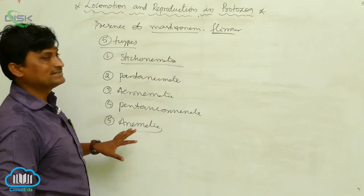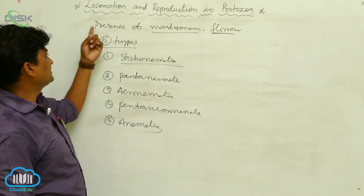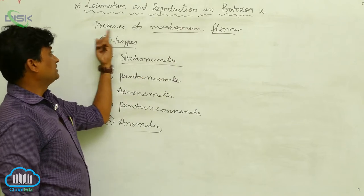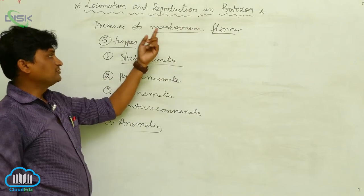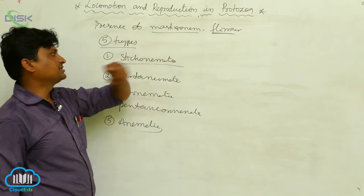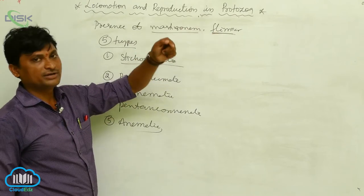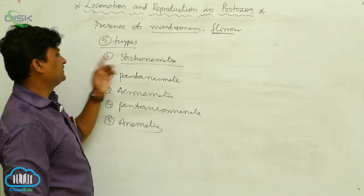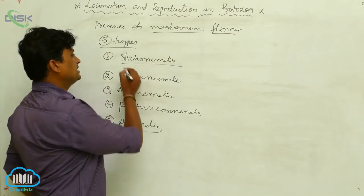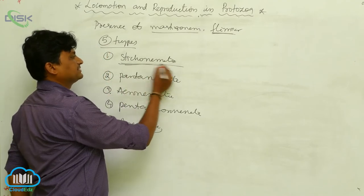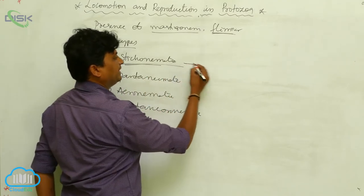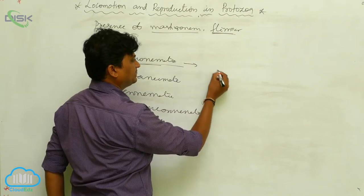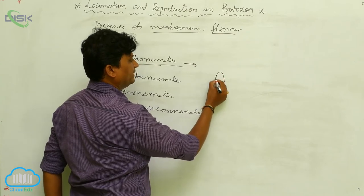The presence of mastogonyms and flimmers is very important here. Both are hair-like projections. There are five types. Stichonimatic — for example, this shows a flagellal blepharoplast.